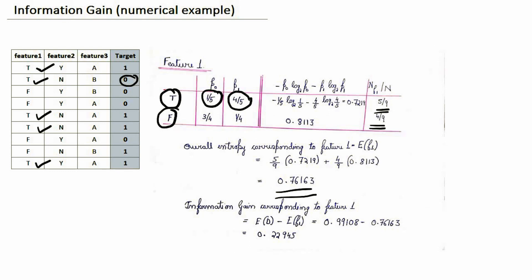Now let's recall the definition of information gain — it is the difference between the entropy corresponding to the parent node and the child node. We don't have a root node as of now; we are in the process of selecting one, which could be any one of Feature 1, Feature 2, or Feature 3. We take advantage of the entropy calculated for the entire dataset, which was 0.99108, and the entropy just calculated for Feature 1 to get the information gain corresponding to Feature 1. Higher the value of information gain, better it is, as we tend more and more towards purity.